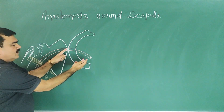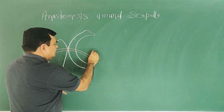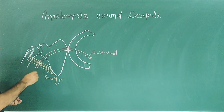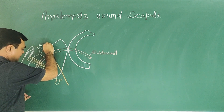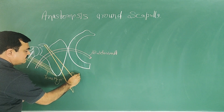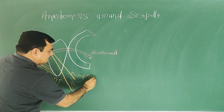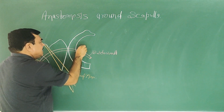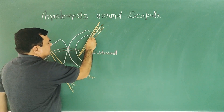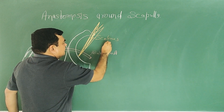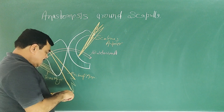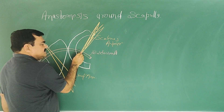This is the axillary artery. Before this is the subclavian artery. The axillary artery is divided into three parts by the pectoralis minor. This is the first part, this is the second part, and this is the third part.